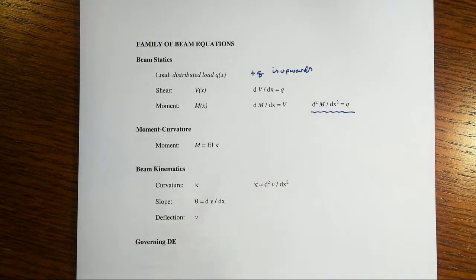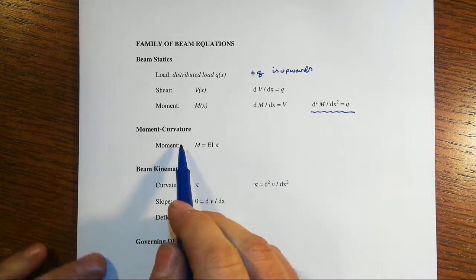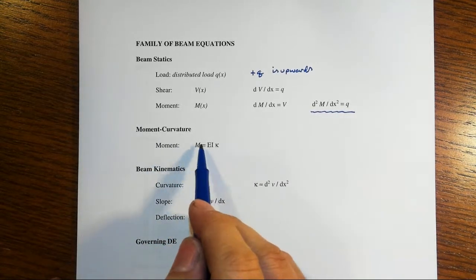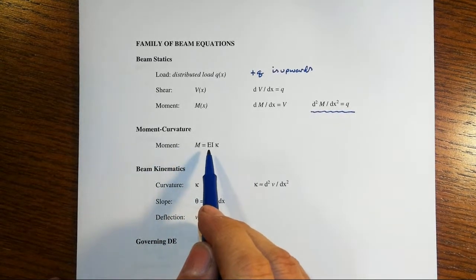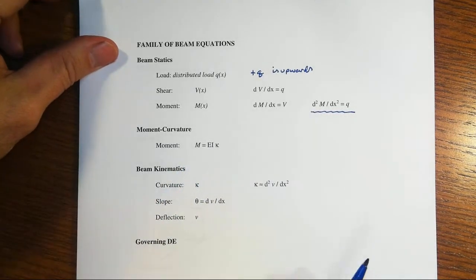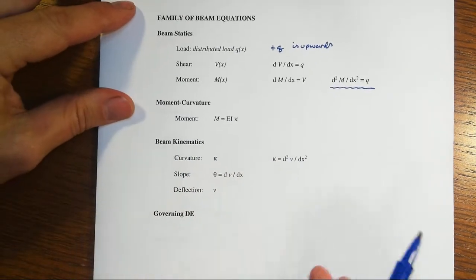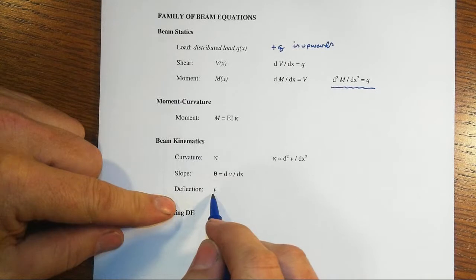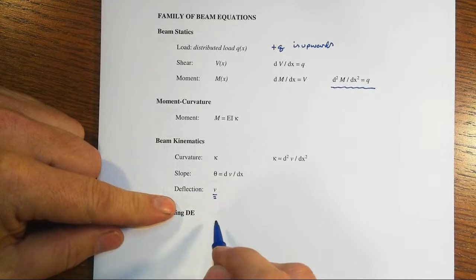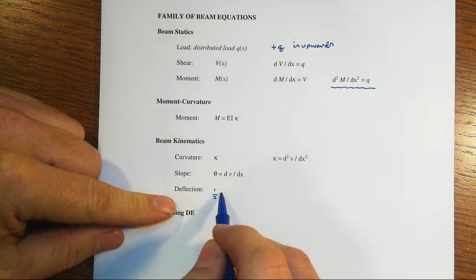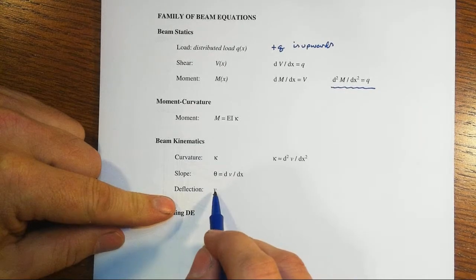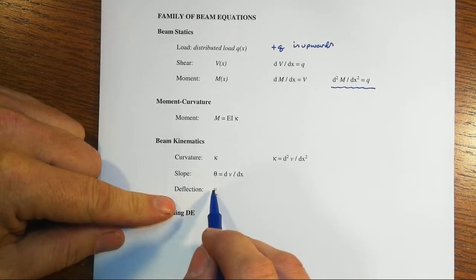Then we also, in a previous module, derived the moment curvature relationship. M equals EI kappa. And then just straight from calculus, if our deflection expression lowercase v, sometimes people will use lowercase y for this, but lowercase v.